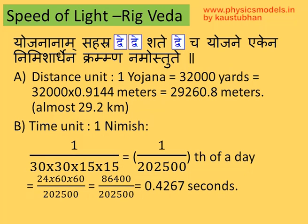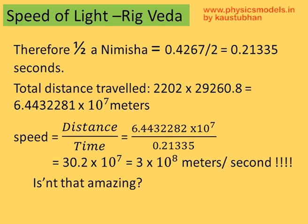The time unit of one nimisha is 1/(30×30×15×15). These come out of various sub-breaks that they had in those days, and it made up one day. That's 1/202,500th of a day. Converting into SI units, we multiply by 24 hours into 60 minutes into 60 seconds, which gives us 0.4267 seconds. As per that mysterious stanza, we take half a nimisha, so we divide 0.4267 by 2, giving 0.21335 seconds.